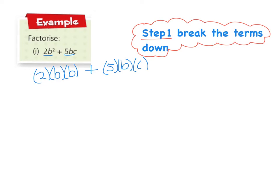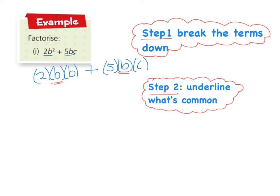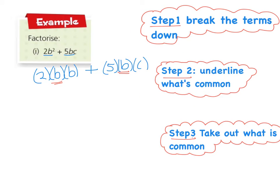Okay, the next thing I'm going to do is I'm going to underline what is common in both of these. So here I have a 2b, a b, and here I have 5b and c. And so the common factor in both of these is b. My third step is to take out what is common and separate it from the rest.